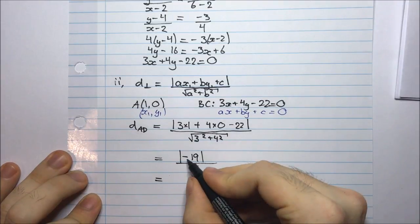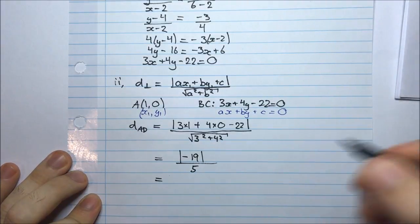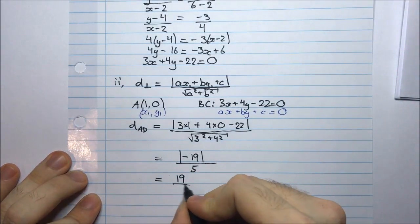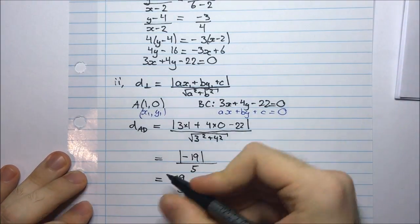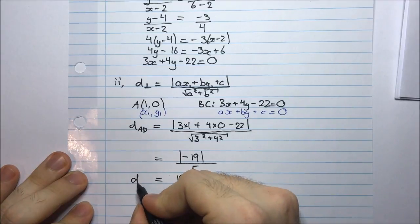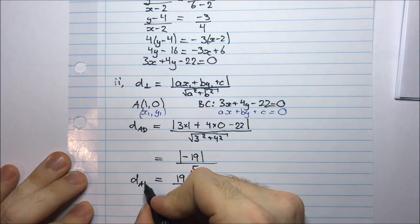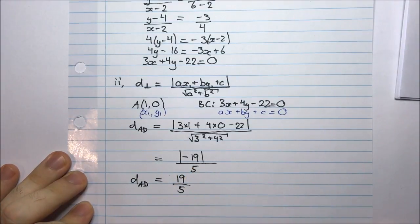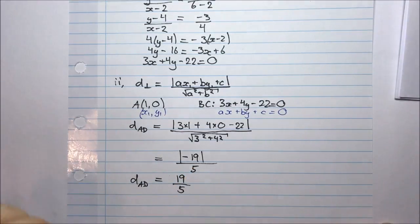Taking the absolute value of negative 19 gives 19. So AD equals 19 divided by 5, and that's the distance of line AD.